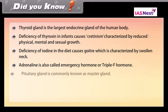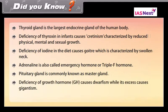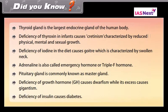The pituitary gland is commonly known as the master gland. Deficiency of growth hormone (GH) causes dwarfism while its excess causes gigantism. Deficiency of insulin causes diabetes.